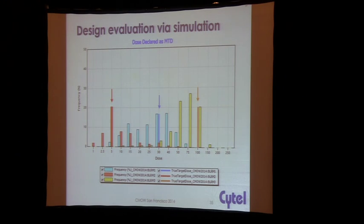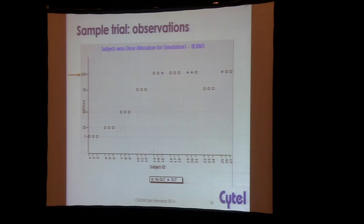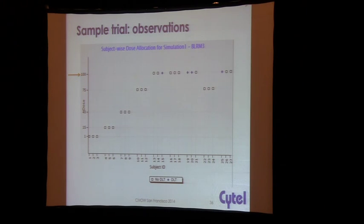Here's an example sample trial — another use of simulation is to make it come alive as a what-if scenario. For the case where the MTD was 100 mg, you can see it escalated, then there was a cohort of three where one DLT was seen. Based on the model, it was decided to stay at that dose. After 0 out of 3, it continued to stay; then after 2 DLTs, it came back down and then came back up. There are things happening here you wouldn't see in a 3+3 — a 3+3 would not have revisited a dose like this.